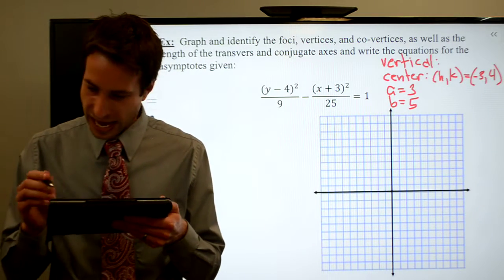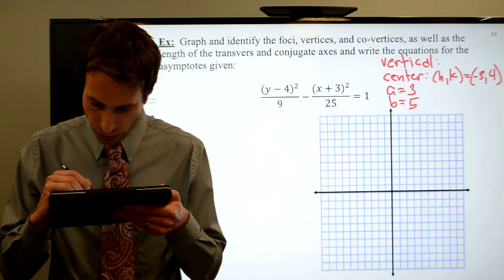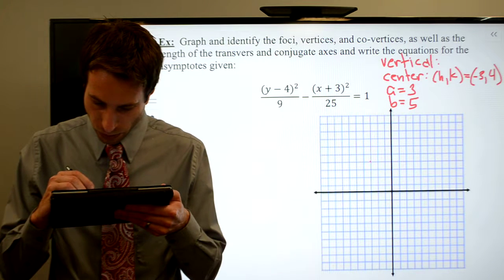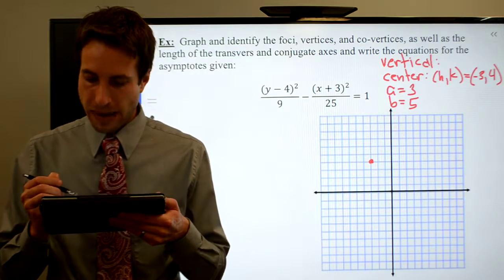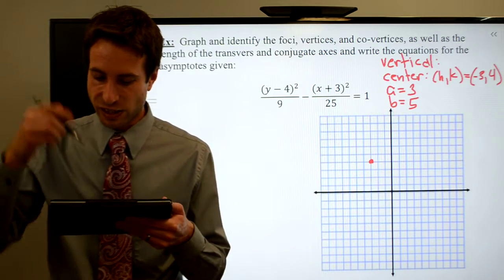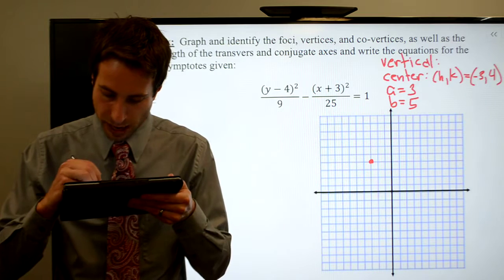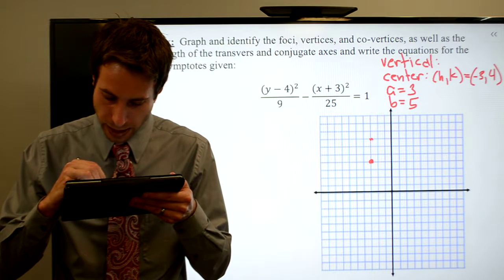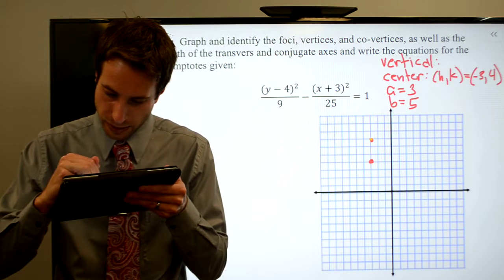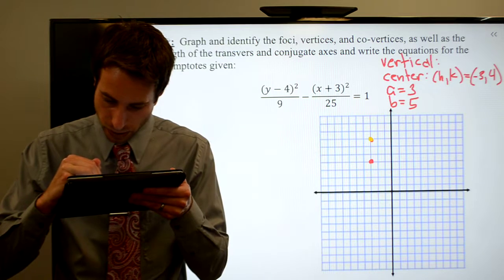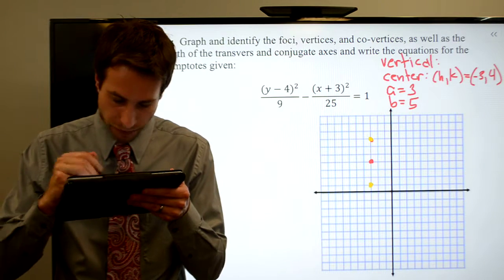My center is at negative three, four, right there. My transverse axis is vertical, and a has to go on the transverse, so that'll be up three. Let me do it in a different color. There is my vertice, there's my other vertice,